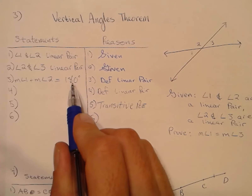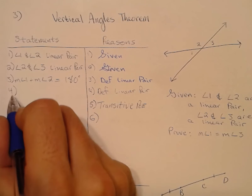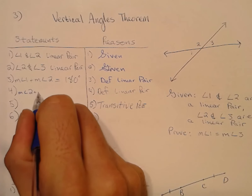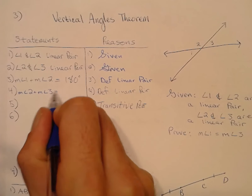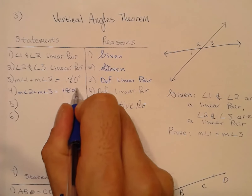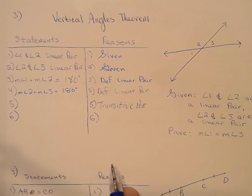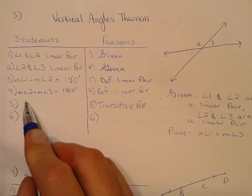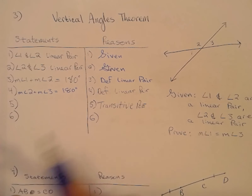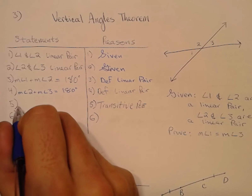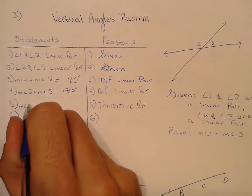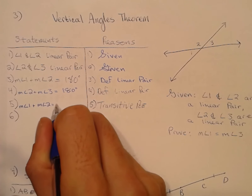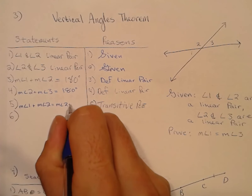If I say that about angles one and two, I might as well make a similar statement for angles two and three: the measure of angle two plus the measure of angle three equals 180 — also the Definition of Linear Pair. Then by the Transitive Property, if this equals 180 and that equals 180, we set them equal: measure of angle one plus measure of angle two equals measure of angle two plus measure of angle three.